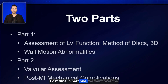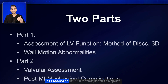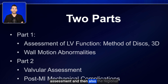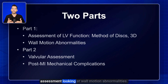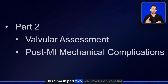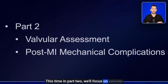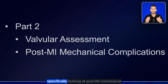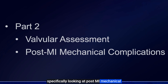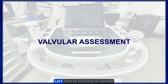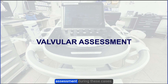Last time, in Part 1, we went over the assessment of LV function — both the global assessment and also the regional assessment looking at wall motion abnormalities. This time, in Part 2, we'll focus on valvular assessment during these cases and also specifically looking at post-MI mechanical complications that we need to look for. Let's start by focusing on valvular assessment.